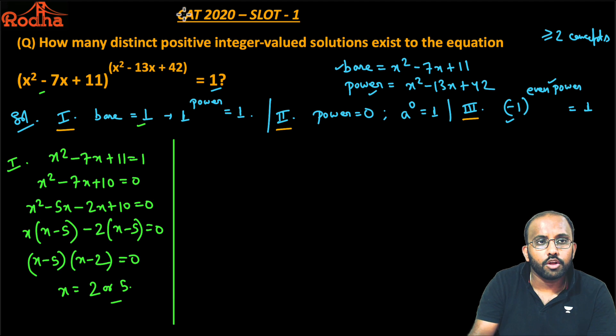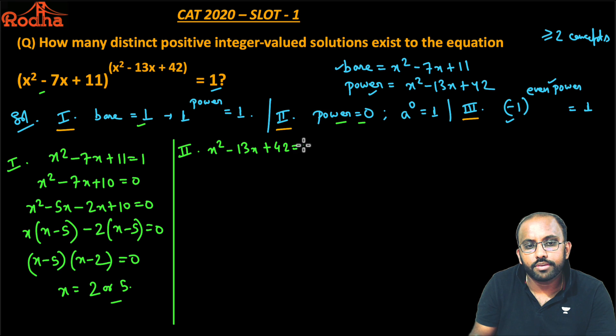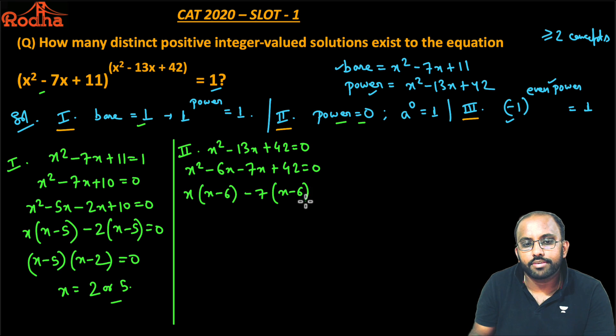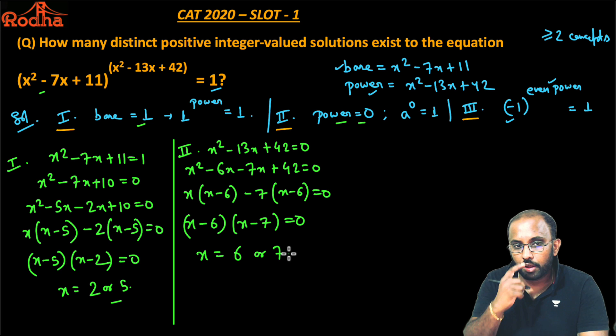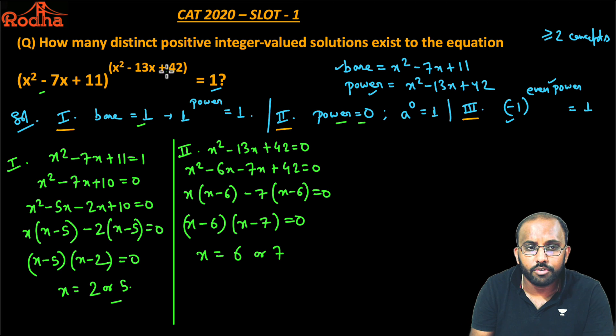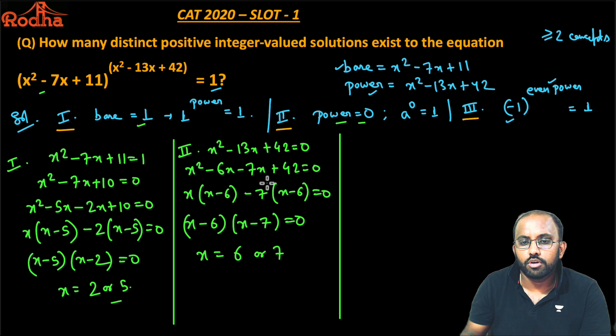Second case is when power equals 0. So x² - 13x + 42 = 0. I can split 42 as 6 × 7: x² - 6x - 7x + 42 = 0, giving (x - 6)(x - 7) = 0. Therefore x = 6 or 7. For 6 or 7, the power becomes 0, which is acceptable.